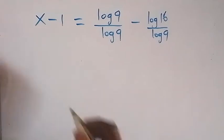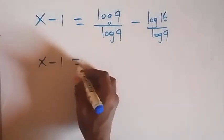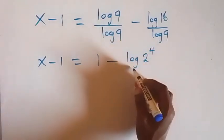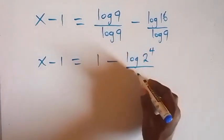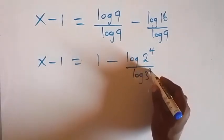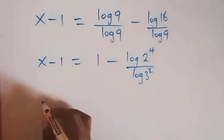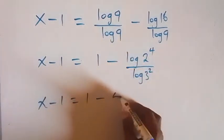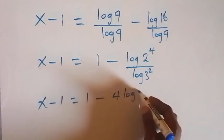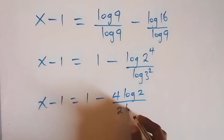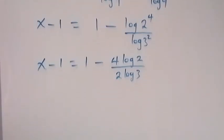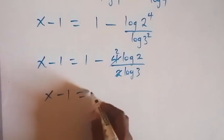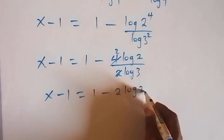So, this becomes x minus 1 equals 1 minus. Here log 16 can be written as log 2 raised to power 4. As this 2 multiplied itself 4 times. And that's 16. So, over here we can write this as log 3 squared. That's 3 times 3, which is 9. And then, and here we have x minus 1 equals 1 minus the power log here. You take 4 and we have 4 log 2. Then, over here, this is 2 log 3. And from here, 2 here can go in 4 and that's 2. And that becomes x minus 1 equals 1 minus 2 log 2 over log 3.